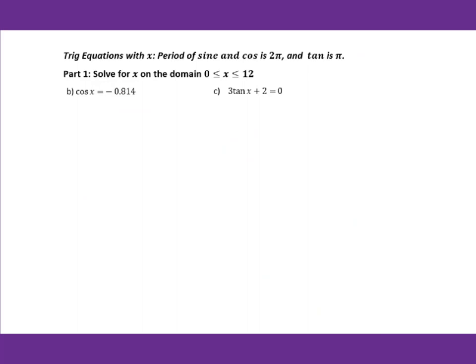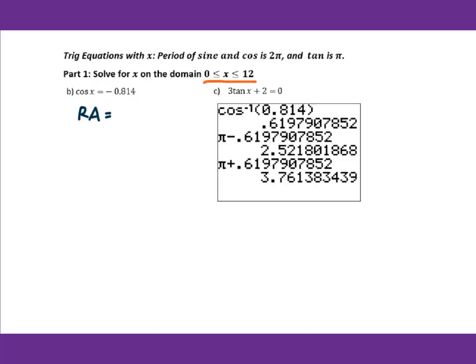Part 1: solve for x on the domain from 0 to 12. This is a linear pattern — you need to isolate the trig on one side. It's already done, so we can go to the reference angle. Since the reference angle is between 0 to π/2, when you put it into your calculator, make sure you input it as positive. You got 0.620.